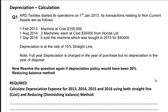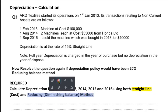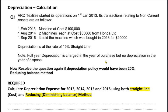The reduction in value of a non-current asset is referred to as depreciation. There are three methods to calculate depreciation in the examination. We'll be discussing two right now: one is the straight line method, and the other is the reducing balance method, also known as the diminishing balance method. We'll discuss the difference between the two with the help of an example.